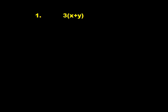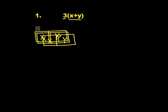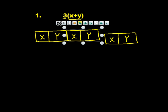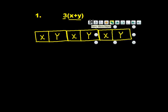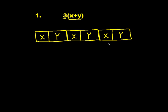Exercises 1 and 2: Create a model for each expression, then write an equivalent expression using the distributive property. For the first one, we have 3 times (x plus y). Start by creating one x plus y, then create 3 copies total. Label each group x plus y, x plus y, and x plus y.